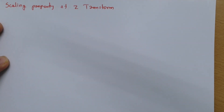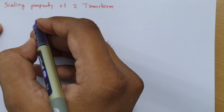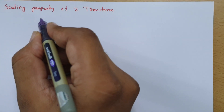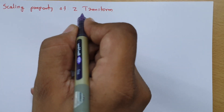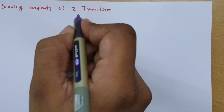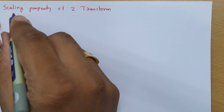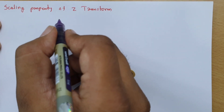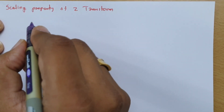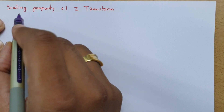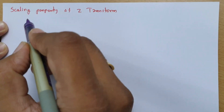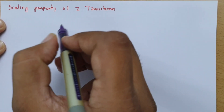Welcome to the Signal and Systems lecture series. In this session, I will be explaining the scaling property of Z transform. First, I will state the property, then give a proof of the scaling property, and finally we will see one example based on it.